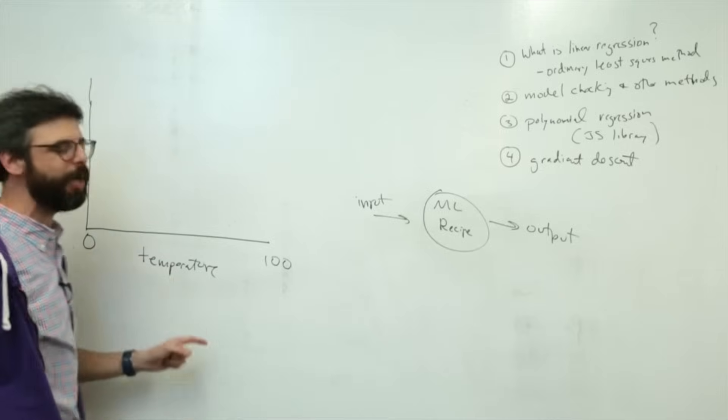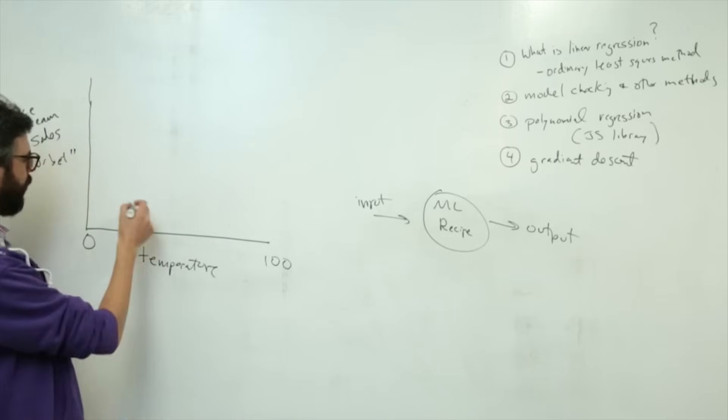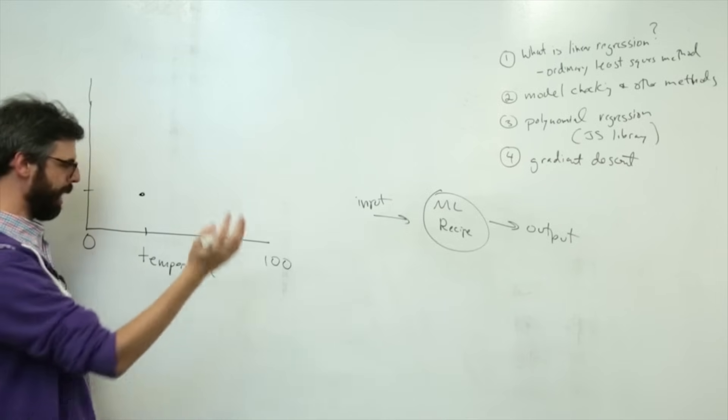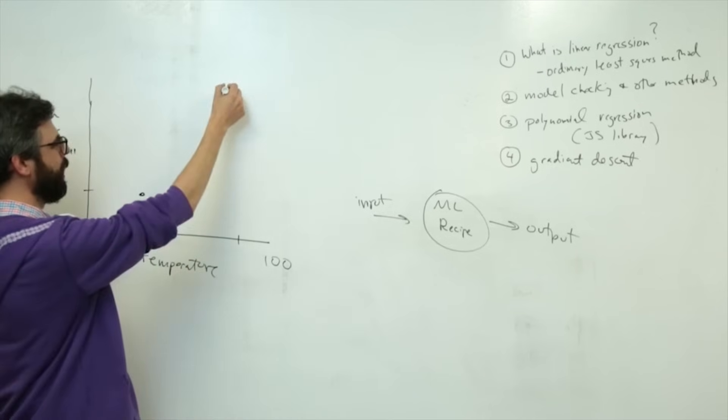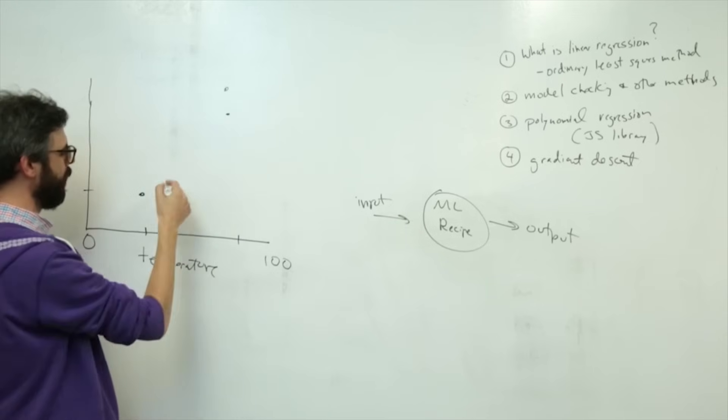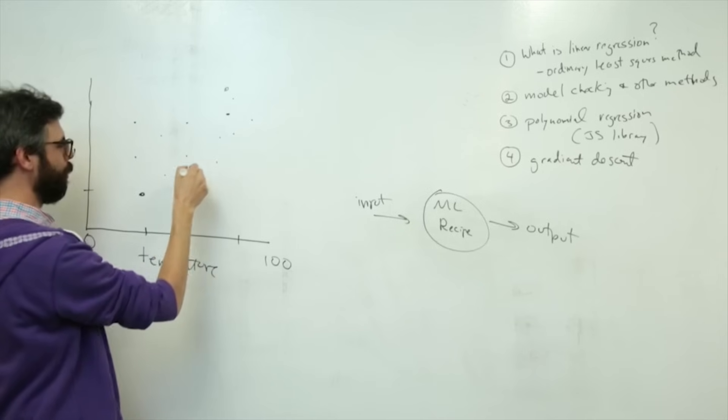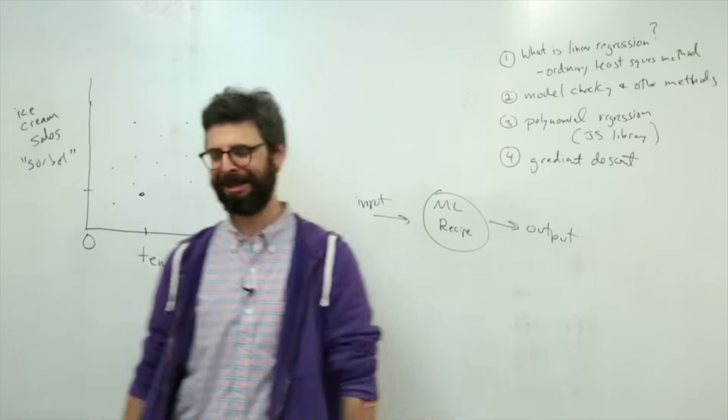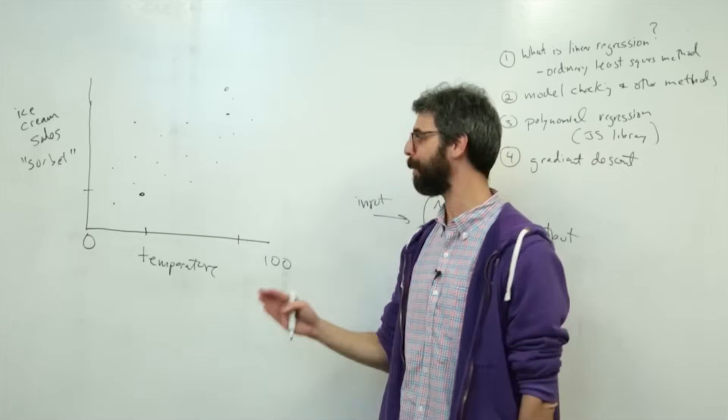So we could say, oh, when it's 24 degrees, there are only three ice creams sold per day. And then on another day it was 90 degrees and there were 18. And you could imagine if you were the owner, the purveyor of an ice cream shop, that you could keep track of your sales as it relates to temperature.